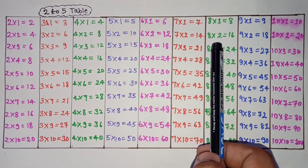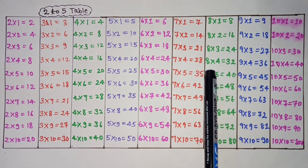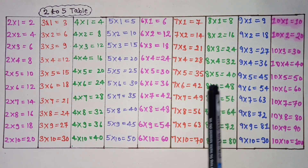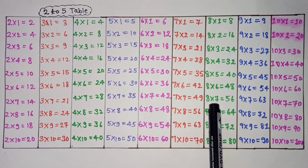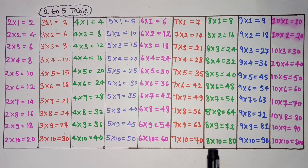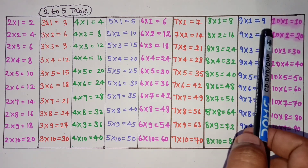8×1 is 8, 8×2 is 16, 8×3 is 24, 8×4 is 32, 8×5 is 40, 8×6 is 48, 8×7 is 56, 8×8 is 64, 8×9 is 72, 8×10 is 80.